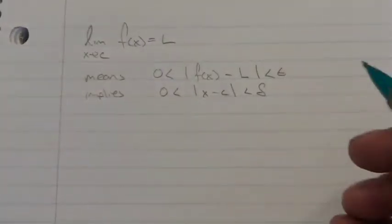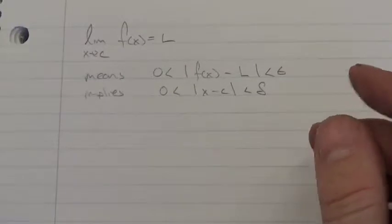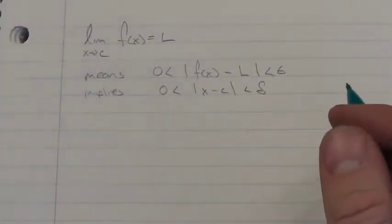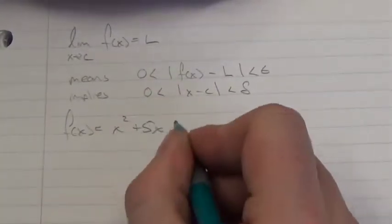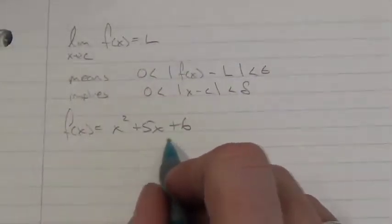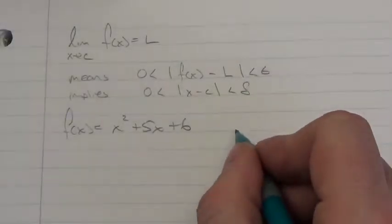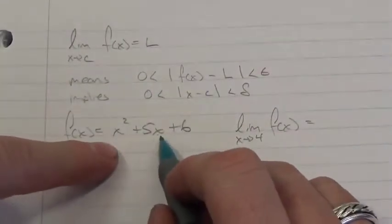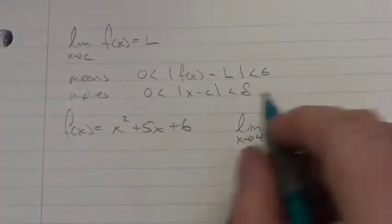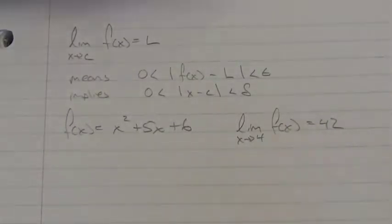We've already looked at this with linear functions. Now I want to show an example with a quadratic. Let f(x) = x² + 5x + 6 — that's just (x + 2)(x + 3), an easy one. Let's verify that the limit as x approaches 4 equals the correct value. Plugging in: 4² + 5(4) + 6 = 16 + 20 + 6 = 42. So our limit is going to be 42, and we'll use epsilon-delta to show that's actually true.